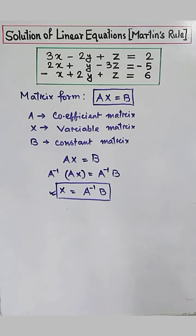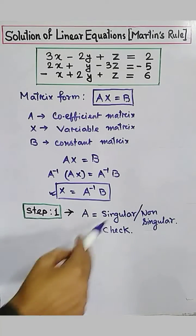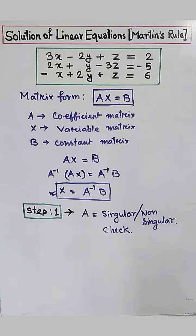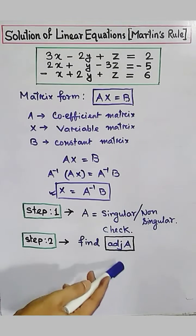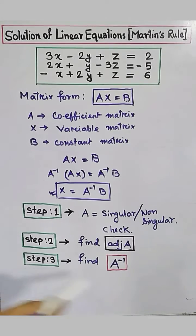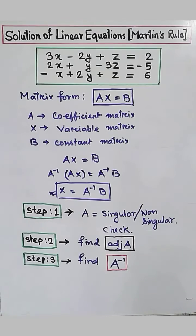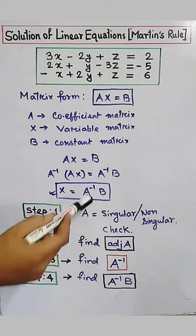To find x, we will follow four steps. Step one: we will check if A is singular or non-singular. Step two: we will find adjoint A. Step three: we will find A inverse, that is A inverse equals adjoint A divided by determinant A. And step four: we will find A inverse b, that is x.